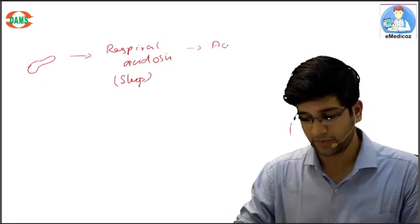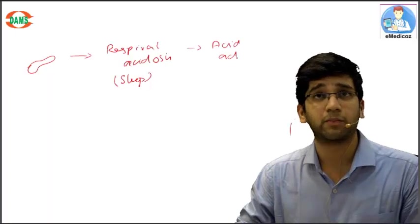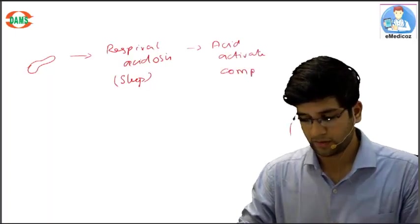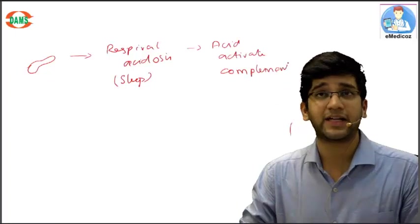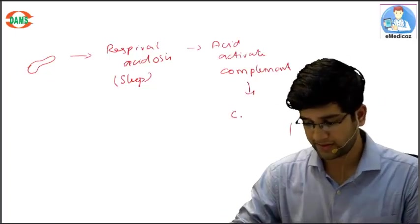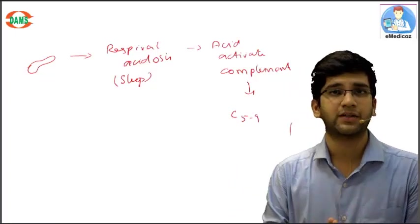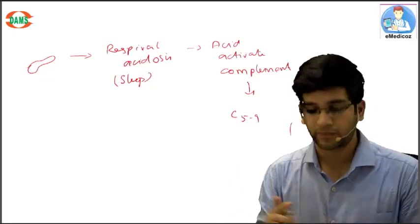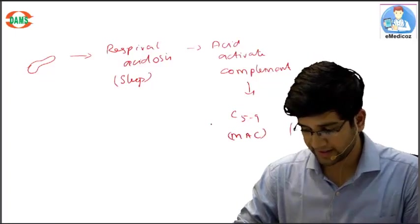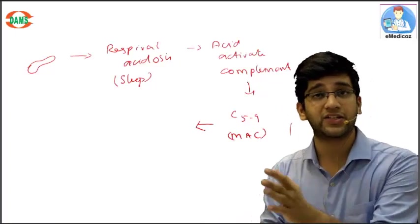This acidic pH is going to activate the complement. The acid pH activates complement. We all know that complement activation - the final end product is going to be C5b-9, the membrane attack complex or MAC.